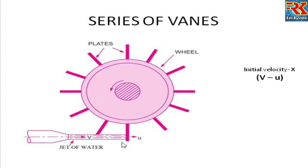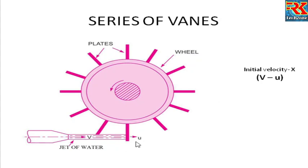Initial velocity in the x-direction: relative velocity is v minus u, where u is the velocity of the moving blade. So initial relative velocity in x-direction is v-u. In the final state, if the blade can move freely, the final velocity in x-direction becomes 0.